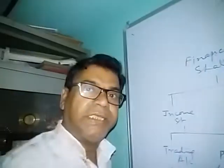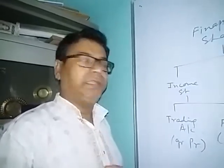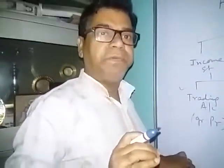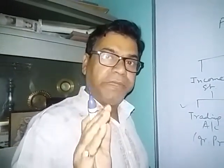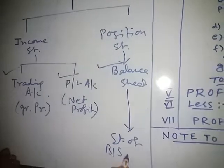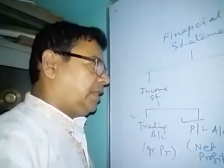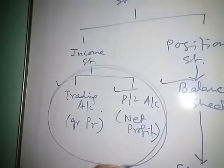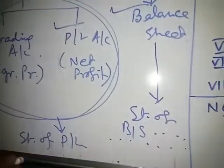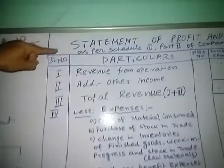All businesses except companies will prepare, at the end of the financial year, a trading account, profit and loss account, and balance sheet. But only the company type of business has to prepare the statement of balance sheet as per Schedule 3, Part 1 of the Companies Act 2013, and instead of a trading account and profit and loss account, they have to prepare the statement of profit and loss as per Schedule 3, Part 2 of the Indian Companies Act 2013.